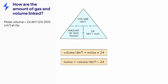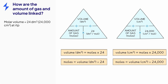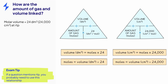If the volume of gas is in centimetres cubed, then we can use this equation triangle, where the molar gas volume is 24,000 centimetres cubed per mole, giving us two similar equations. If you see an exam question that mentions RTP and it involves gases, it is more than likely that you will need to use this relationship.